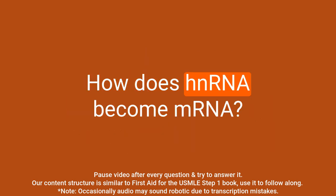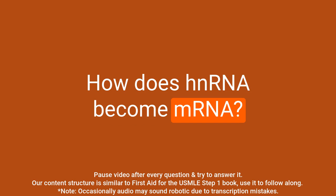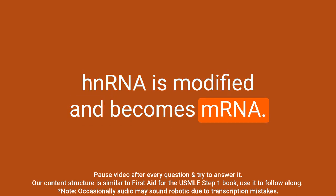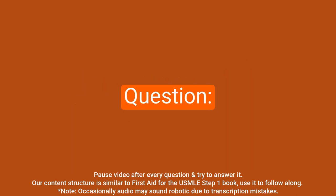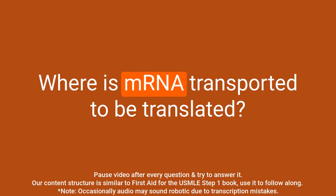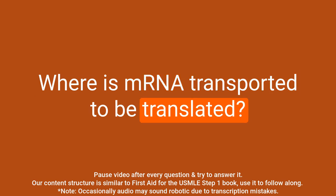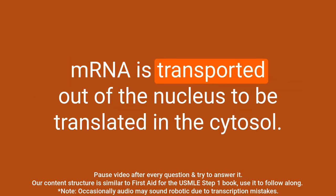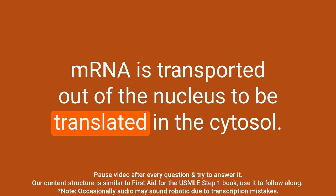Question: How does hnRNA become mRNA? Answer: hnRNA is modified and becomes mRNA. Question: Where is mRNA transported to be translated? Answer: mRNA is transported out of the nucleus to be translated in the cytosol.